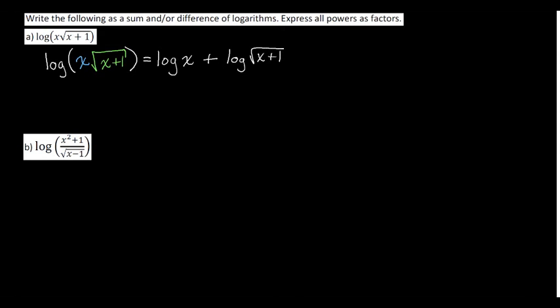Now we're not quite done here, because we can rewrite the square root as an exponent. Rewriting this as x plus 1 to the 1 half. That would then allow us to use the factoring property to pull out the 1 half in front of the logarithm. But notice we still keep the parentheses here. That way it reminds us that it's the log of the quantity x plus 1.